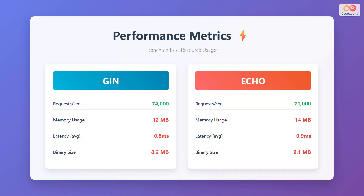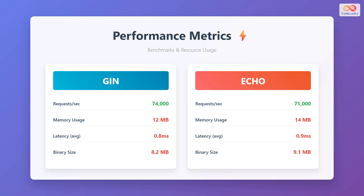Performance is a crucial factor when choosing a web framework, so let's examine how JIN and ECHO compare in various metrics. In terms of requests per second, JIN slightly edges out ECHO with approximately 74,000 requests per second compared to ECHO's 71,000. This difference, while measurable, is relatively small and may not be significant for most applications.